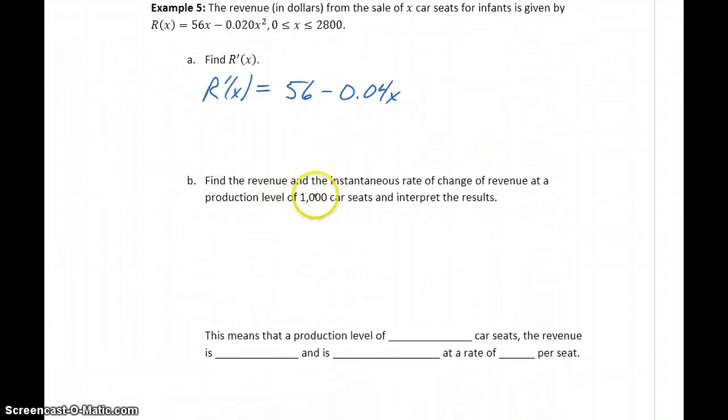We would want to find the revenue and the instantaneous rate of change of revenue at a production level of 1,000 car seats. That means we want the revenue function evaluated at 1,000, and we want to evaluate the derivative function at 1,000. This first result gives us the revenue, and our second result, r prime, gives us the rate of change of our revenue.